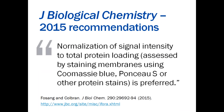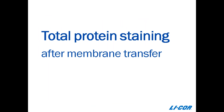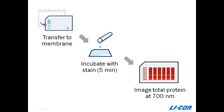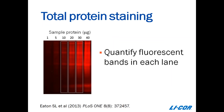Next, we'll talk about total protein staining for normalization. This approach uses total sample protein as a direct readout — it's like normalization by committee, using the sum of many protein signals to estimate the sample concentration in each lane, and it's an antibody-independent method. Total protein normalization is performed by staining a replicate gel with Coomassie, or even better, by staining the actual membrane after transfer. The Journal of Biological Chemistry issued new recommendations in December 2015 indicating that normalization to total protein loading, assessed by staining membranes using Coomassie Blue, Ponceau S, or other protein stains, is preferred.